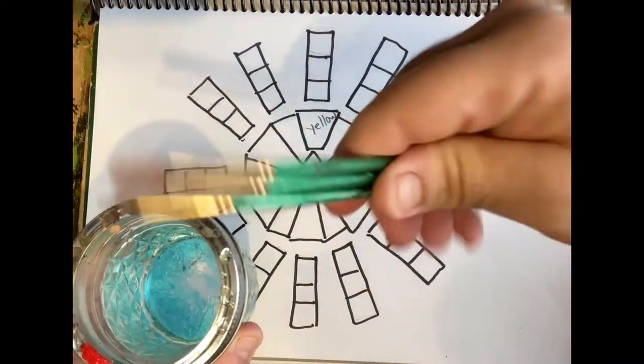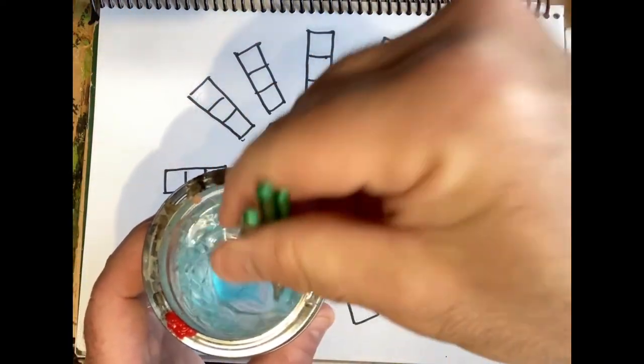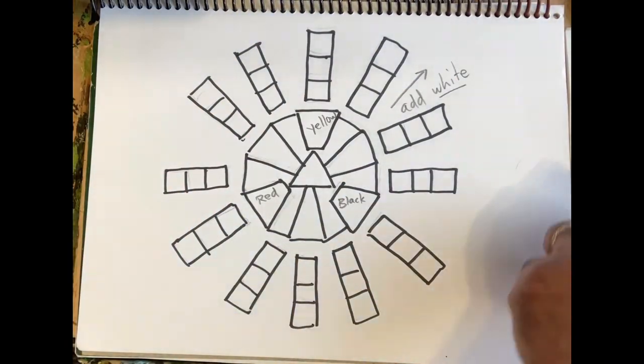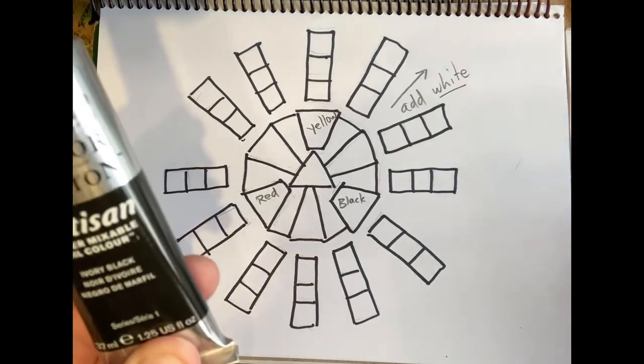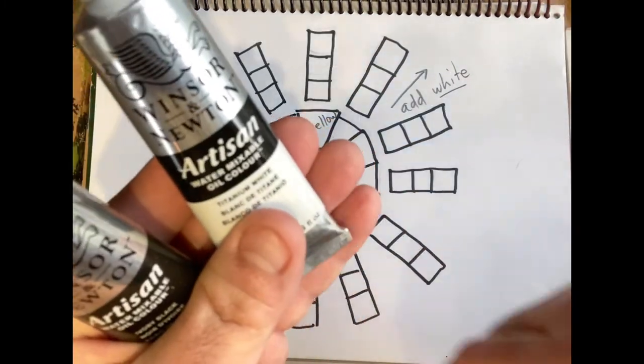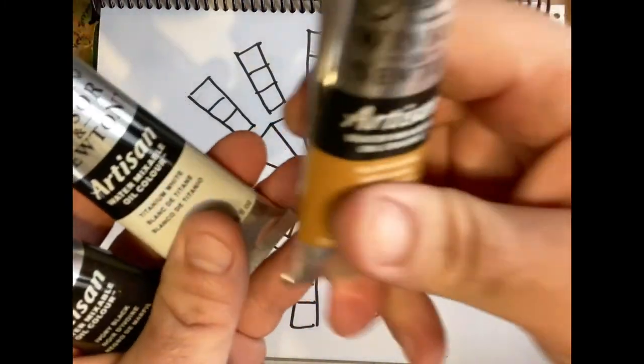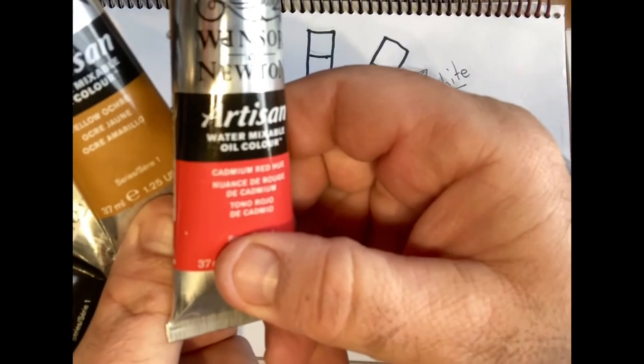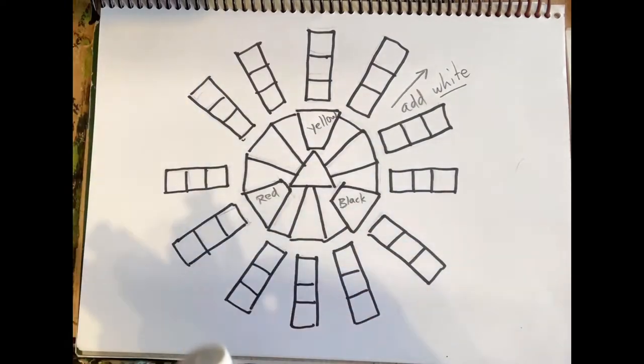I need some brushes. I need a tube of black oil paint, a tube of white, a tube of yellow ochre, and a tube of red. I also need a palette or scrap paper for color mixing.